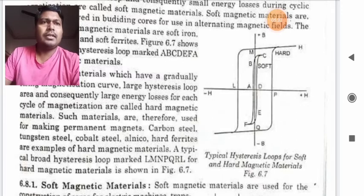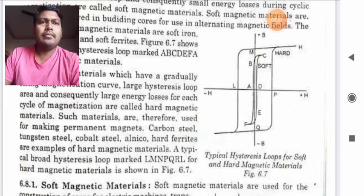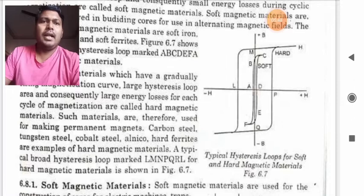In this diagram you can easily see the point L, M, N, P, Q, R and again back to L. So it is for your hard magnetic material.